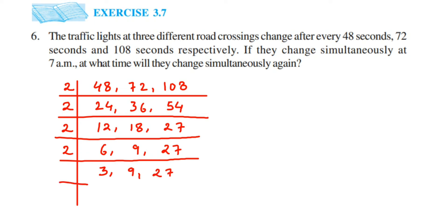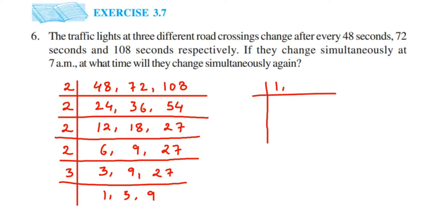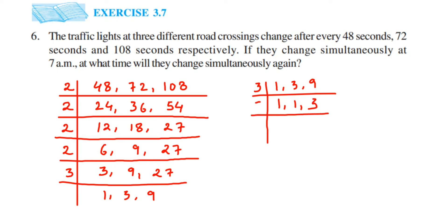Now take 3, because we can divide all three numbers by 3: 3 ÷ 3 = 1, 9 ÷ 3 = 3, 27 ÷ 3 = 9. Then divide by 3 again: 1 stays 1, 3 ÷ 3 = 1, 9 ÷ 3 = 3. And one more time by 3: we get 1, 1, and 1.